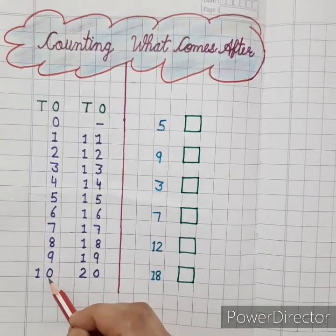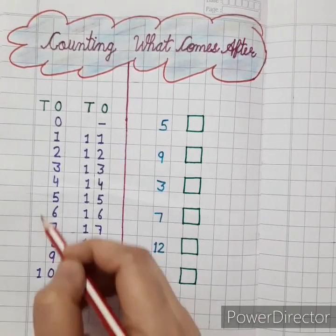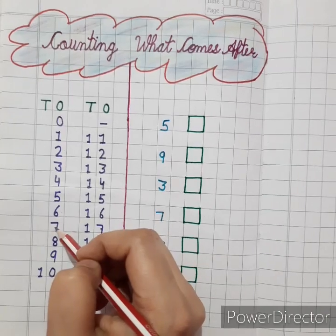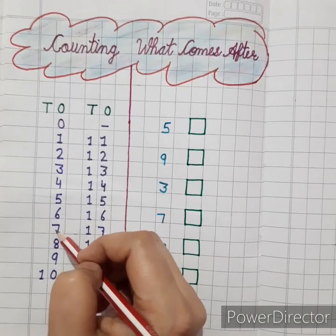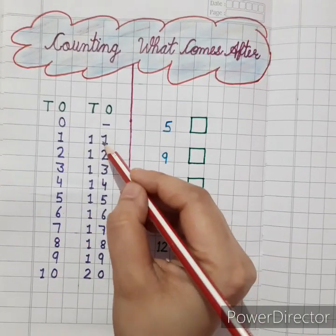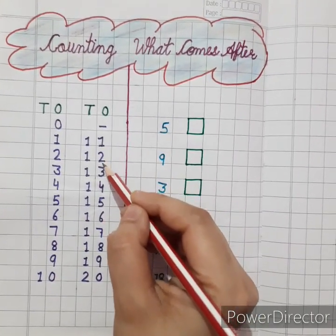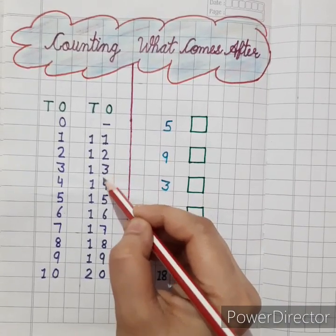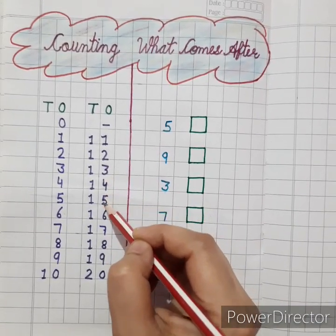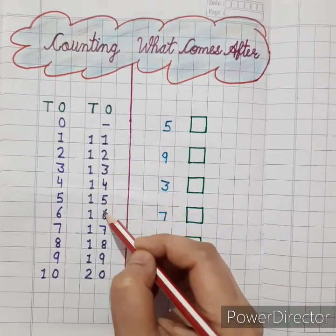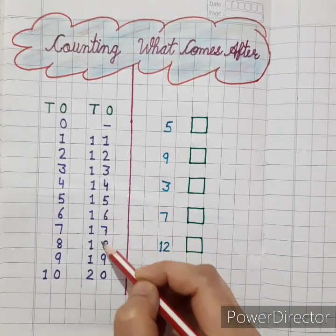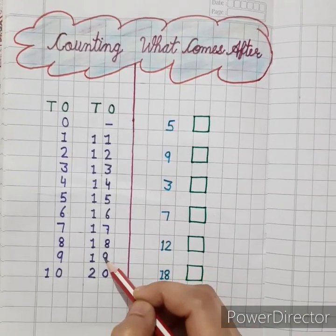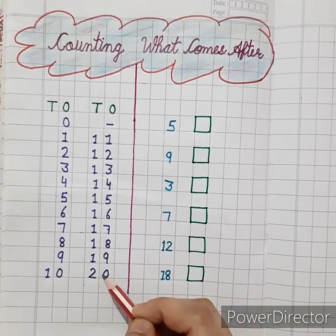Kids, do you know this is also called forward counting. Now, 11, 12, 13, 14, 15, 16, 17, 18, 19, 20.